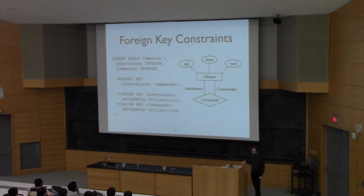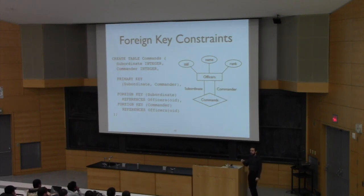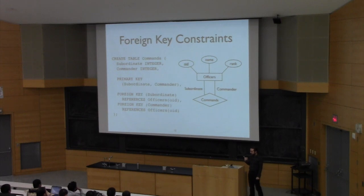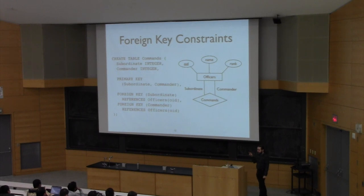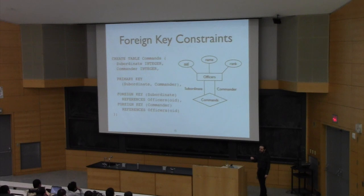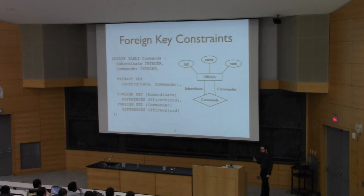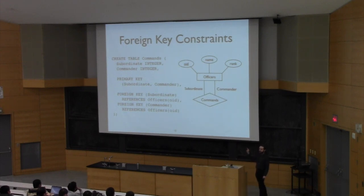There are some cases where the attribute names will be different from those in the target relation. For instance, if I want to define a subordinate-commander relation, I can tell SQL that the subordinate attribute refers to the OID attribute in the officers relation by putting that in parentheses after the relation name. So this basically says: subordinate references officer OID, and commander also references officer's OID.